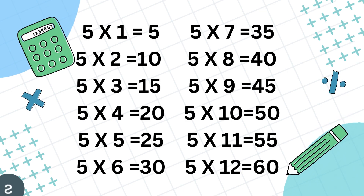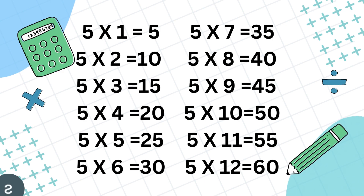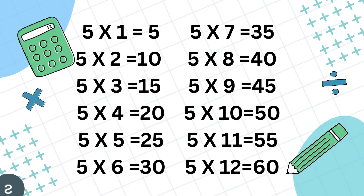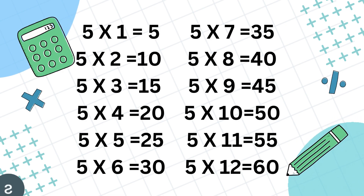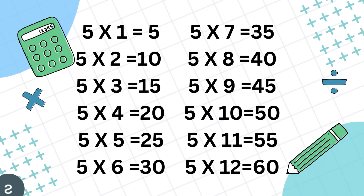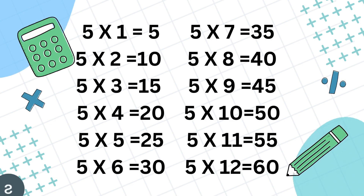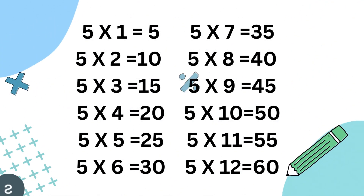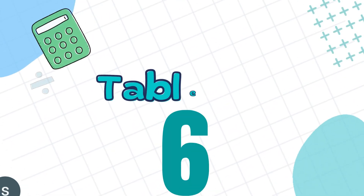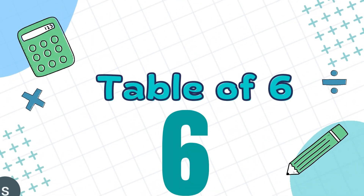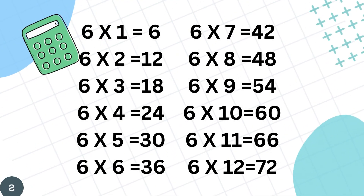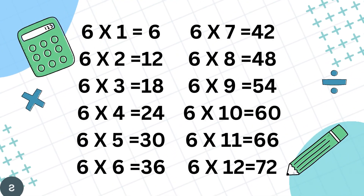5 7's are 25, 5 8's are 40, 5 9's are 45, 5 10's are 50, 5 9's are 55, 5 12's are 60.